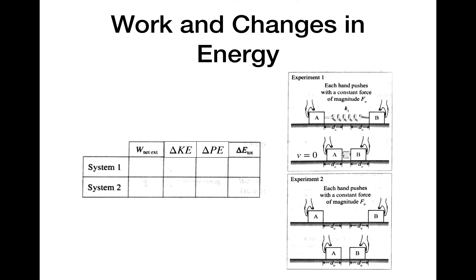For each of those systems we want to look at the net external work, the change in kinetic energy, and the change in potential energy, and determine whether each of those is positive, negative, or zero. We'll start with experiment two because that's a little bit simpler.